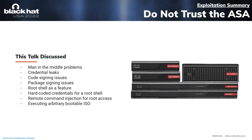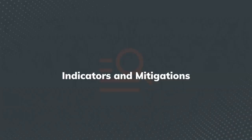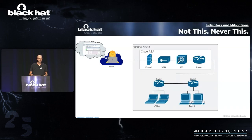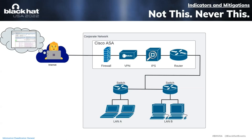That's the hacks I have for you. In this talk we talked about man-in-the-middle problems, credential leaks, code signing issues, package signing issues, root shells as a feature, hard-coded credentials for a root shell, command injection for root access, and executing arbitrary bootable ISOs. Many of these make the ASA a perfect little Trojan horse. The number one thing I hope is taken away from this talk is that you can never use ASDM over the internet without potentially risking your ASA. The man-in-the-middle issue, to my knowledge, is not slated to be fixed. I would actually encourage you to stop using ASDM altogether and to disable the ASDM feature on your ASA.